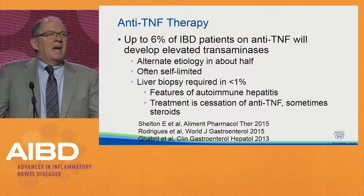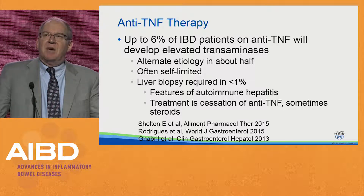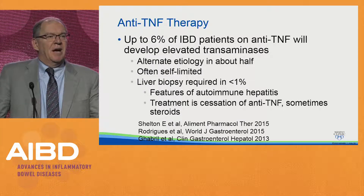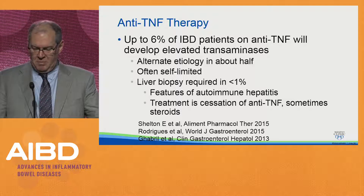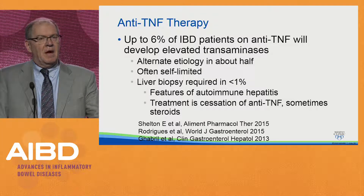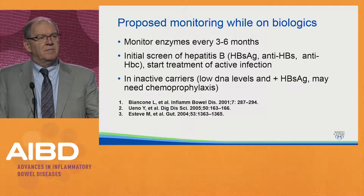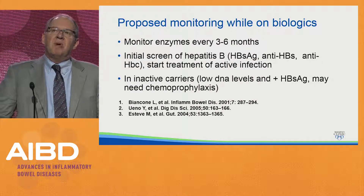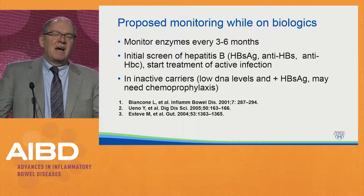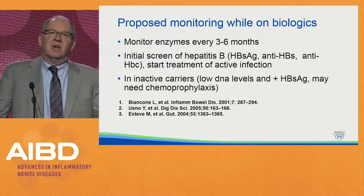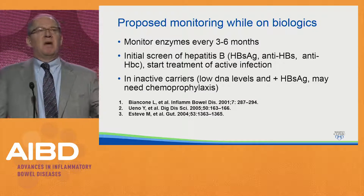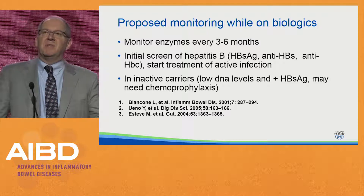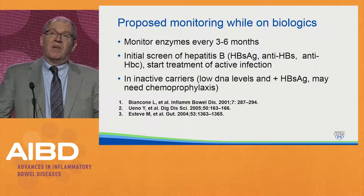With vedolizumab, we anecdotally see sometimes transient bumps in transaminases, but again it's self-limited, and we're not seeing as much autoimmune-type hepatitis as with anti-TNFs. Treatment is cessation of the anti-TNF and consideration of corticosteroids. In my typical practice, I'm not checking LFTs every three months for patients on anti-TNFs; if I'm seeing the patient annually, I'll get LFTs then. One important thing to remember, especially if you practice in a high-prevalence area, is to check the chronic hepatitis profile.